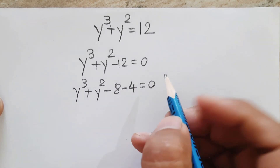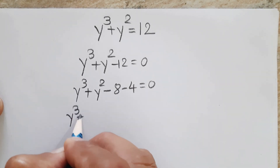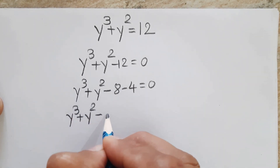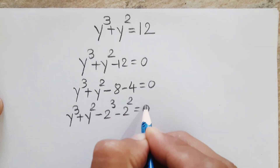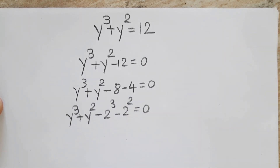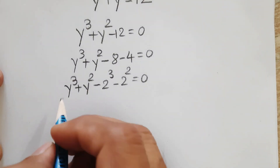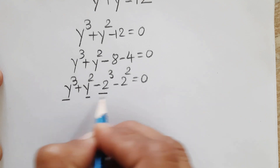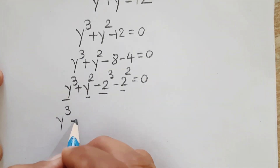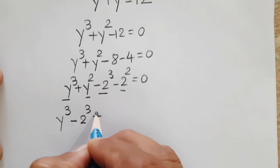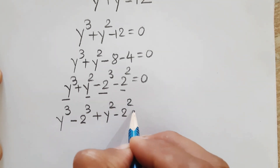So that is equal to 0, which is the same as -12. We rewrite the equation as y³ + y² - 2³ - 2² = 0, since 2² = 4 and 2³ = 8. Now let's group the cube terms and square terms together: y³ - 2³ + y² - 2² = 0.